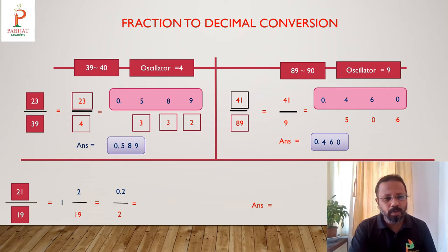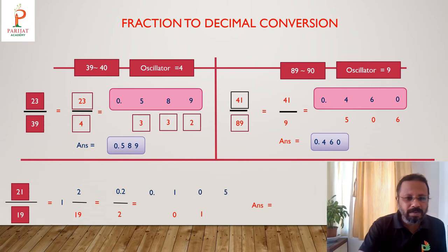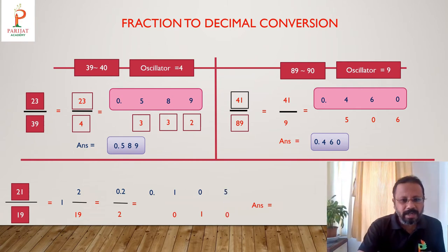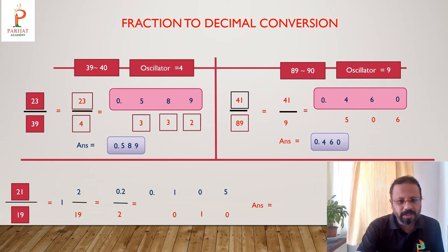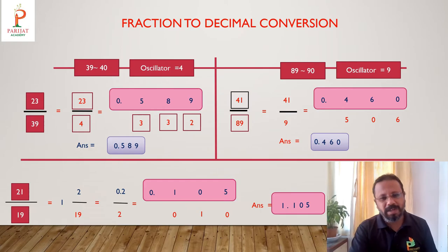The osculator of 19 is 2, so we consider 2 upon 2. Starting: 2 ones are 2, remainder is 0. Gross dividend is 01; quotient is 0, remainder is 1. Gross dividend becomes 10. 2 fives are 10, remainder is 0. So the decimal part is 0.105, and our full answer for 21 upon 19 is 1.105.